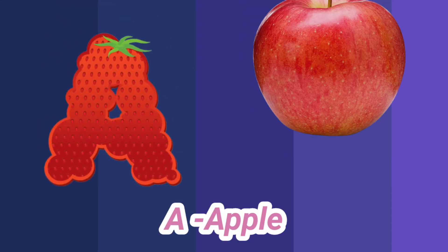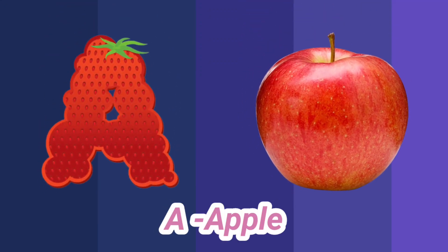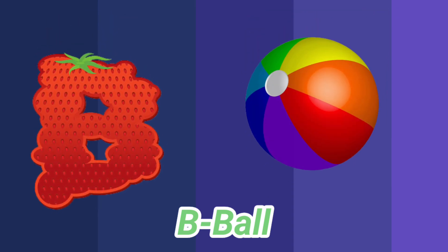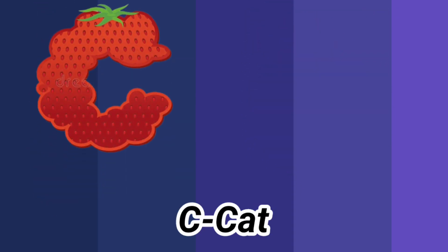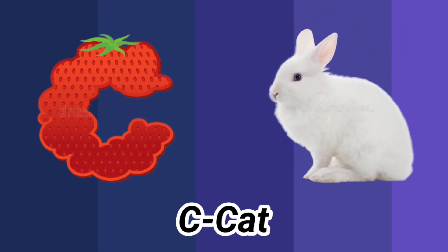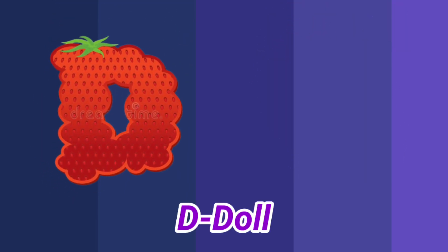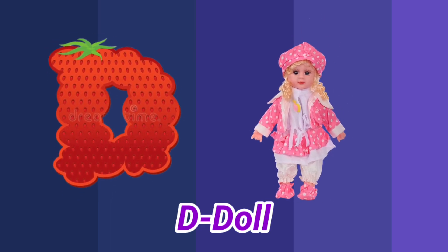A is for apple, a-a-apple. B is for ball, b-b-ball. C is for cat, c-c-cat. D is for doll, d-d-doll.